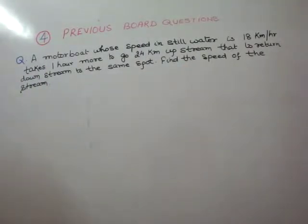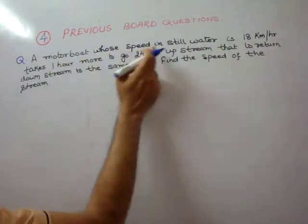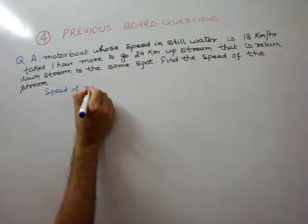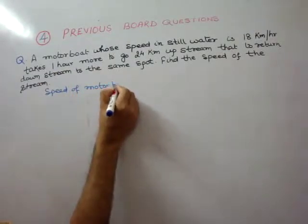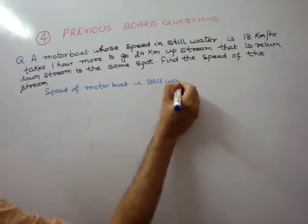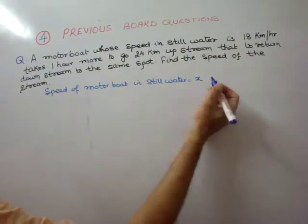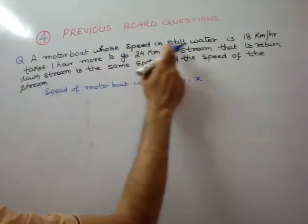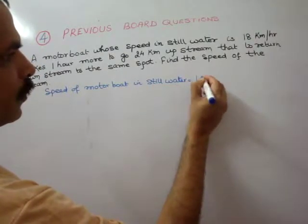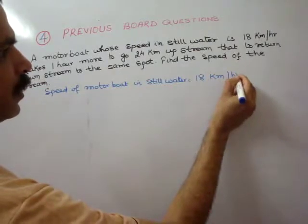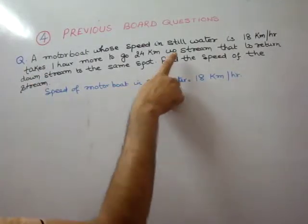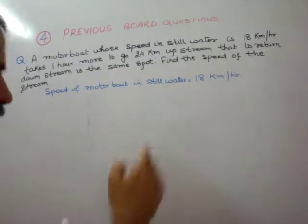There are two things here. One is the speed of the motor boat in still water, which is 18 kilometers per hour. Now this is still water, but if it is upstream and downstream, then what will happen?